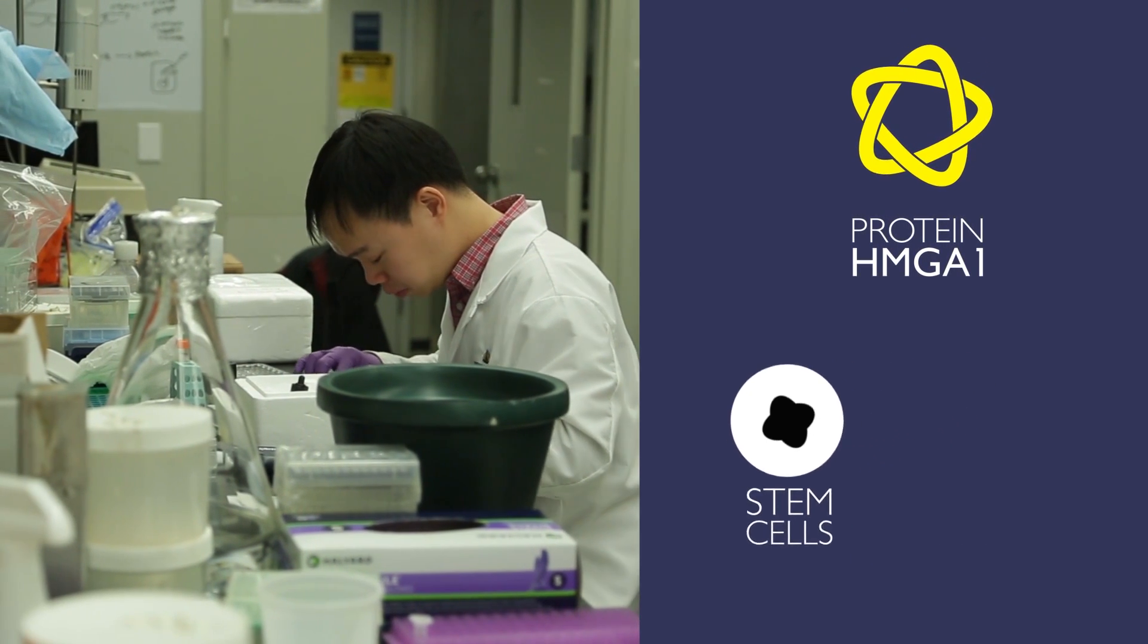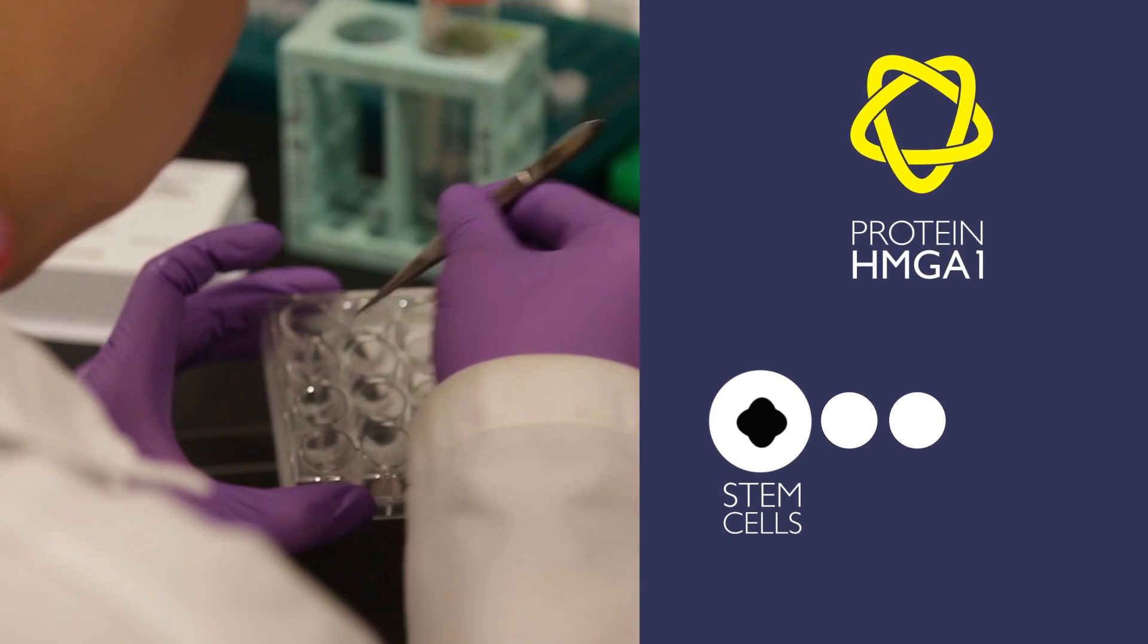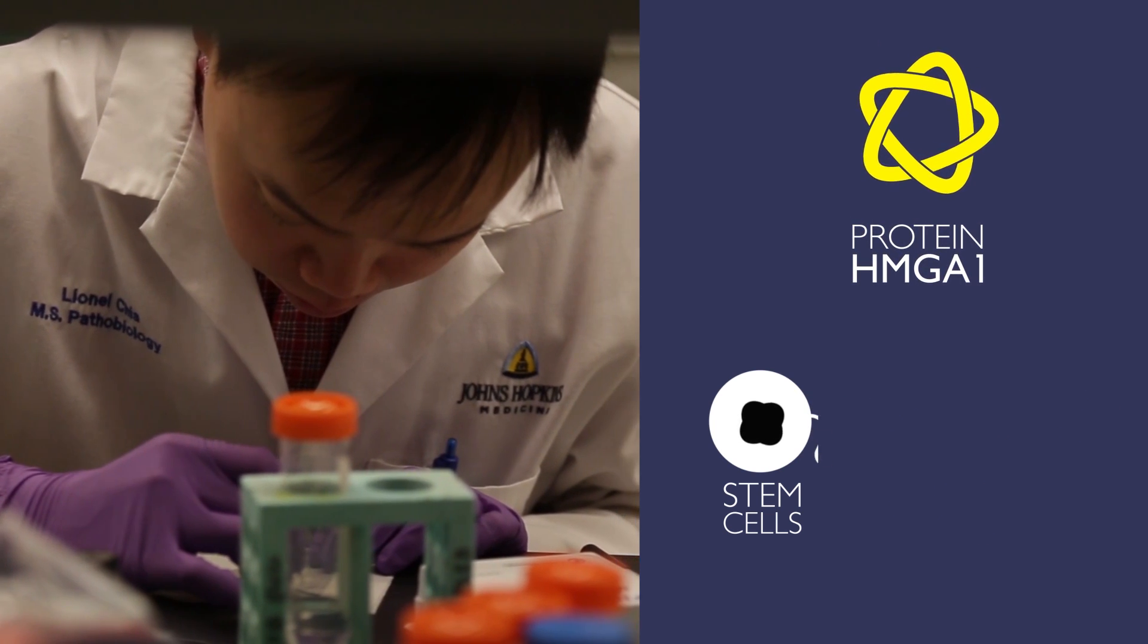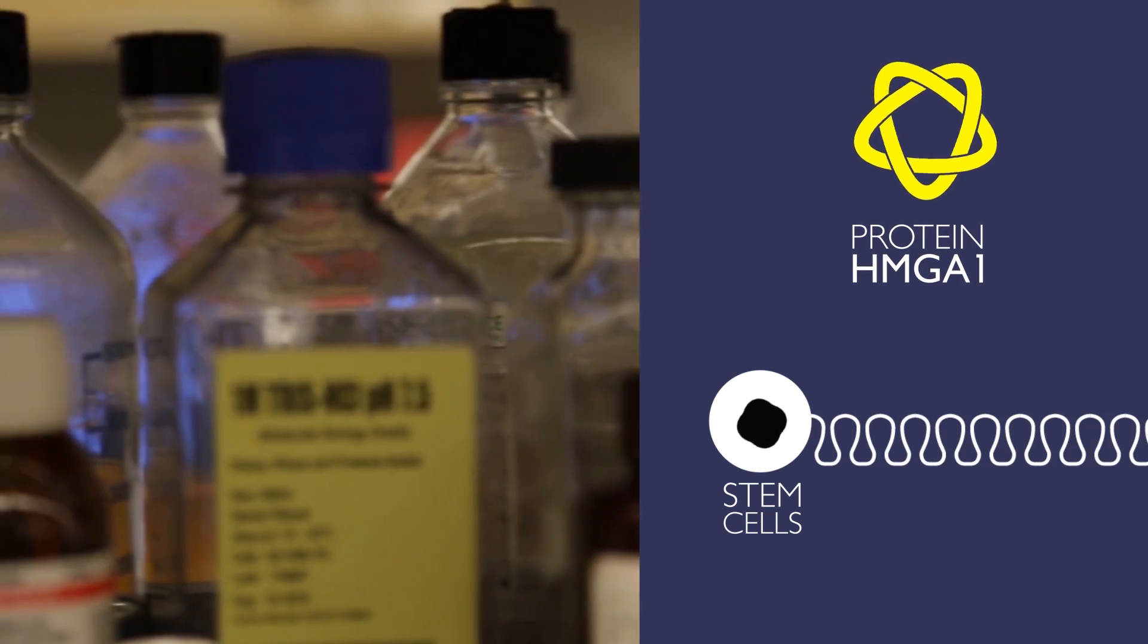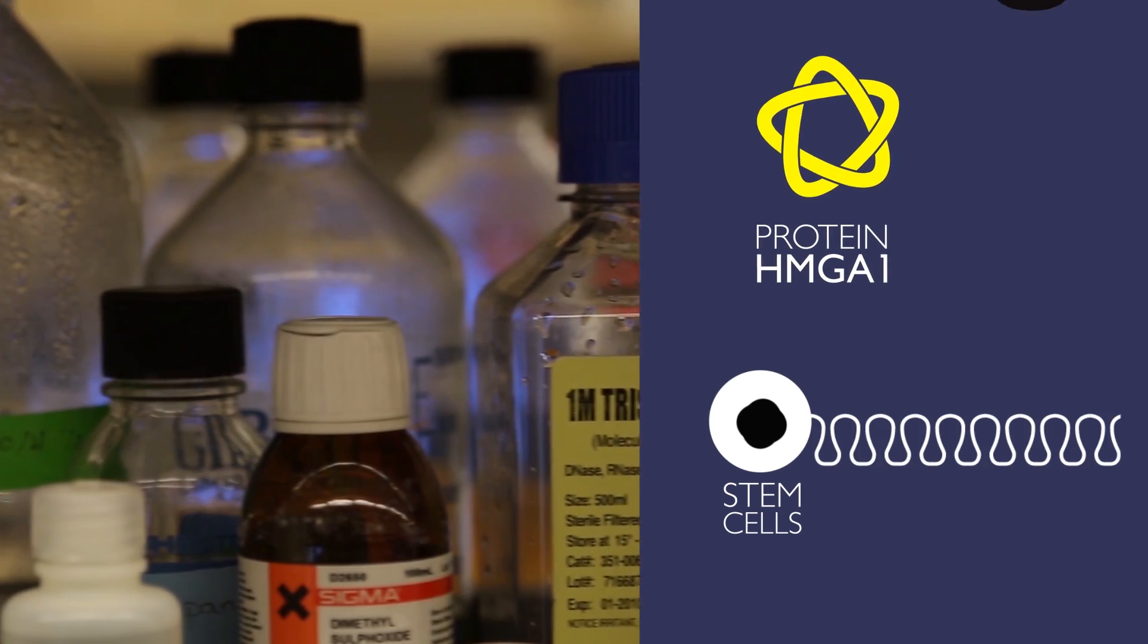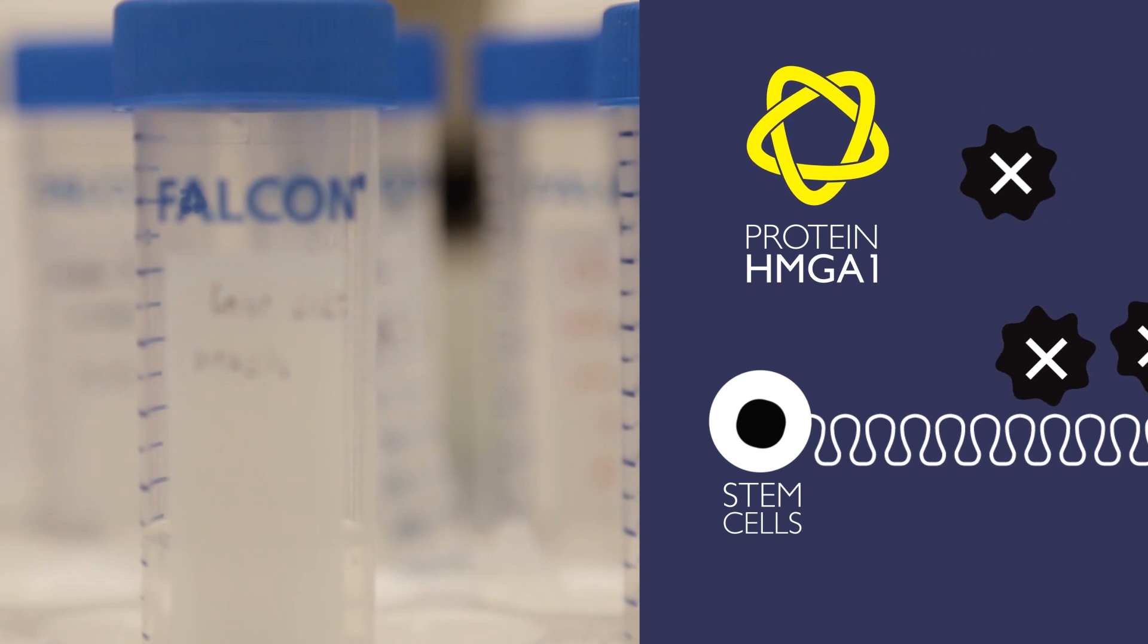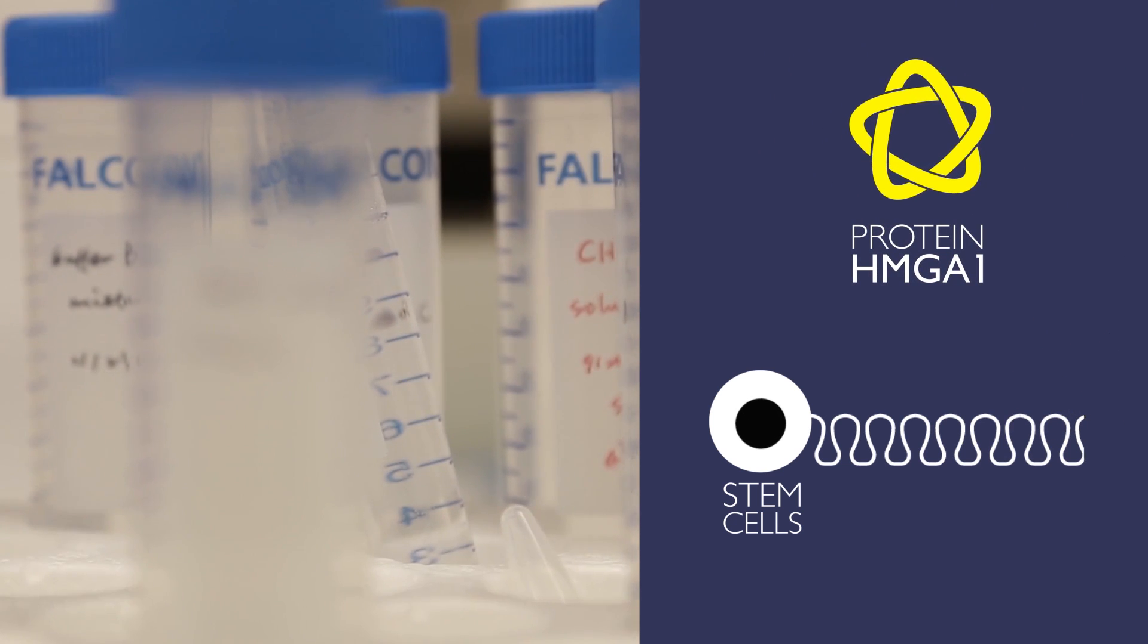Stem cells are really important because they generate the daughter cells that constitute the lining of our intestines. If we didn't have this lining, which needs to reform every three to five days, we wouldn't be able to absorb nutrients from our food or protect ourselves from the bacteria and toxins within our intestines.